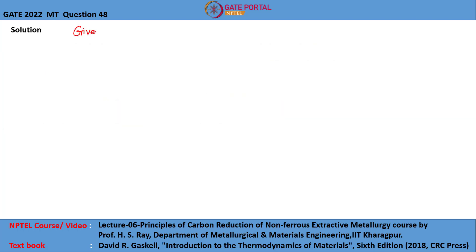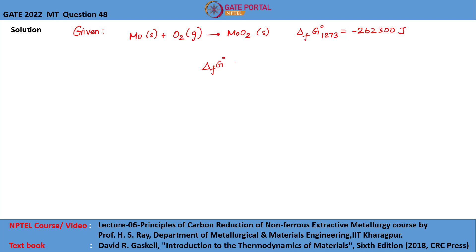It is given that 1 mole of molybdenum reacts with 1 mole of oxygen to form molybdenum dioxide, and the Gibbs energy of formation for this reaction at 1873 Kelvin is minus 262300 joules. As we know, Gibbs energy of formation equals minus RT ln K, where K is the equilibrium constant. K equals the product of activity of the products divided by the product of activity of the reactants, so K equals activity of molybdenum dioxide divided by activity of molybdenum multiplied by activity of oxygen.